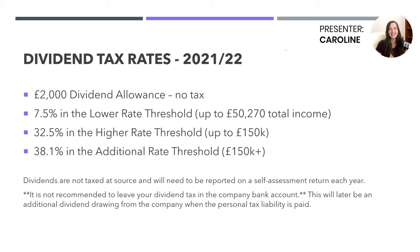Let's get into the dividend tax rates for 2021-22. There is a dividend allowance of £2,000 with no tax. Any further dividends will be taxed at the appropriate rate based on your other earned income — earned income is always added to the calculation first, then dividends are added on top. The lower rate threshold is 7.5% dividend tax, up to £50,270 total income. The higher rate threshold is 32.5%, up to £150,000 total income. Keep in mind that if income exceeds £100,000, you start losing your personal allowance. The additional rate is 38.1% on anything above £150,000.